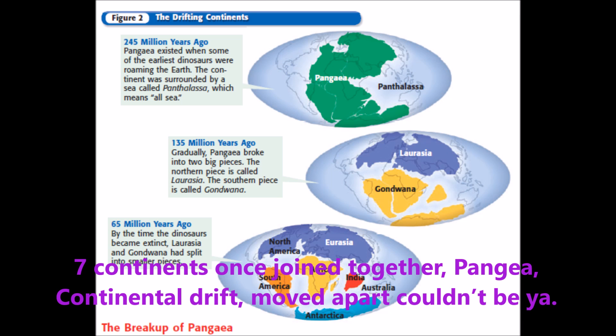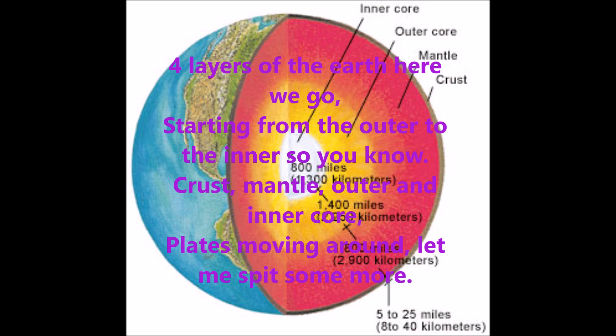Seven continents were once joined together — Pangaea. Continental drift moved them apart. Four layers of the earth, here we go — crust, mantle, outer and inner core, plates moving around, let me spit some more.